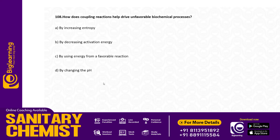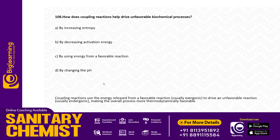How do coupling reactions help drive unfavorable biochemical processes? Options: by increasing entropy; by decreasing activation energy; by using energy from a favorable reaction; by changing the pH. Answer: Coupling reactions use energy released from a favorable reaction to drive an unfavorable reaction, making the overall process more thermodynamically favorable.